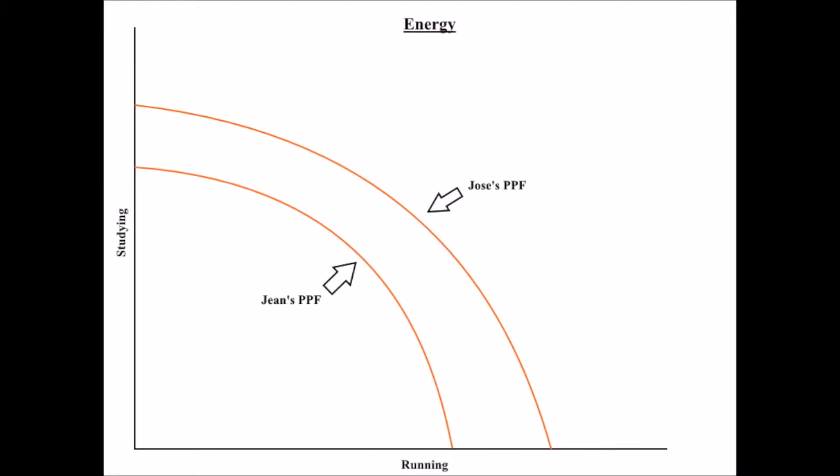Listen, Jean. Jose is running better than you because he is utilizing his resources efficiently and you simply are not.